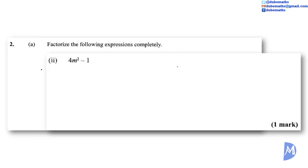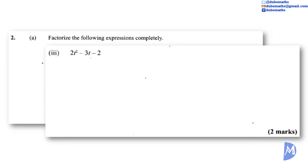Factorize the following expression completely: 4m squared minus 1. This is difference of squares. We know that 4m squared is the same as 2m squared, and of course, 1 is the same as 1 squared. So thus, the answer is 2m plus 1 multiplied by 2m minus 1. A point to note here, it doesn't matter which bracket is written first.